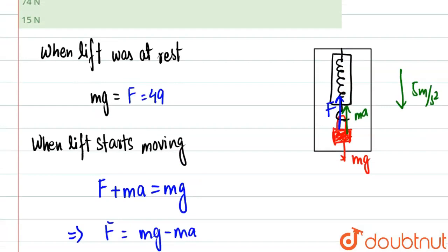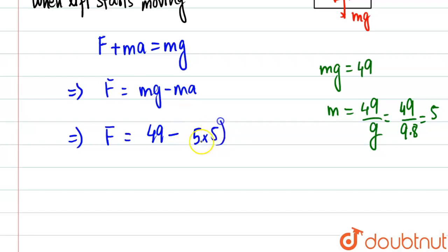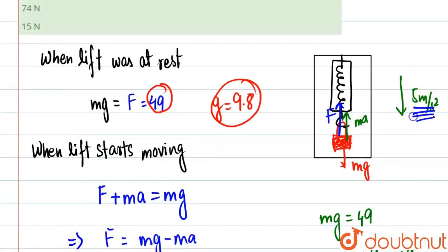If it is given as 49, that means we have to take the value of g as 9.8 for proper calculation. From here, the mg is basically given as 49, so mass will be equal to 49 by g, which will be equal to 49 by 9.8. So this will come as 5 kilograms. Now we will have force is unknown, mass is basically 5, mg is basically 49, minus mass of object is 5 kilograms and acceleration of observer is also 5.